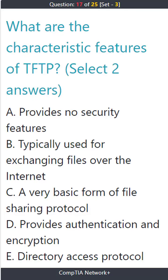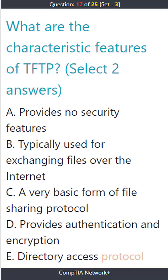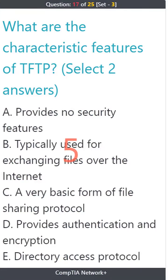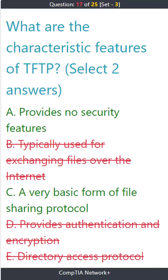Question 17. What are the characteristic features of TFTP? Select two answers. A. Provides no security features. B. Typically used for exchanging files over the internet. C. A very basic form of file sharing protocol. D. Provides authentication and encryption. E. Directory access protocol. The correct answers are A. Provides no security features, and C. A very basic form of file sharing protocol.